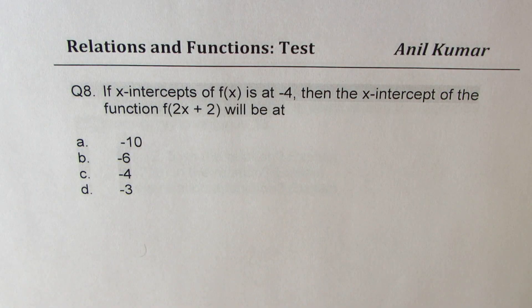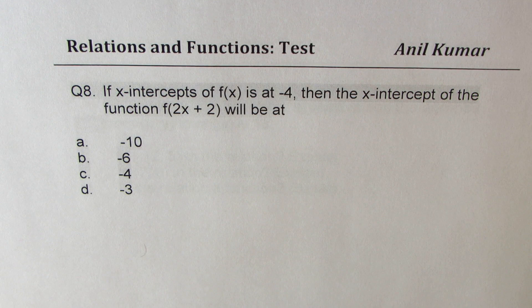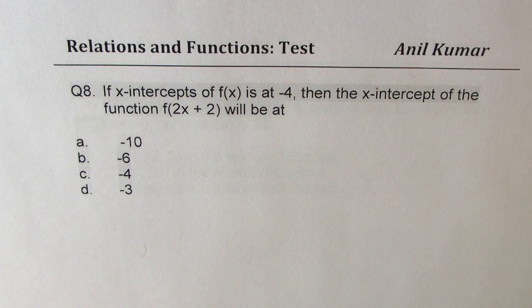Question number eight: if the x-intercept of f(x) is at -4, then the x-intercept for the function f(2x + 2) will be at: -10, -6, -4, or -3?